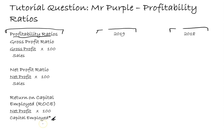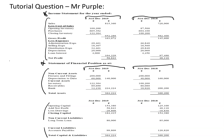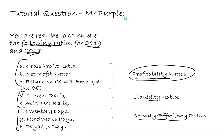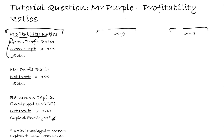A note on capital employed - it can be tricky to calculate. Capital employed is the owner's capital plus long-term loans. For the gross profit ratio, I need the gross profit and the sales, both of which are in the income statement. Going back to the income statement, there's the gross profit figure and the sales figure, so I'll pop both of those in.